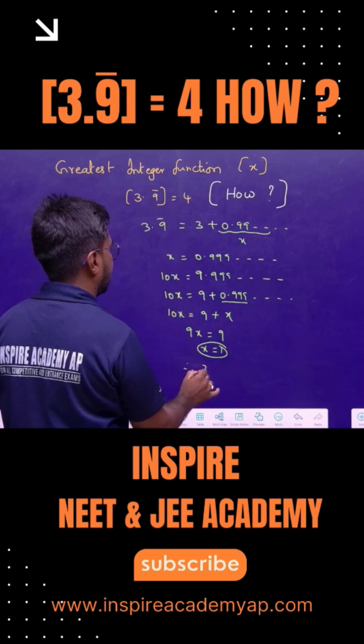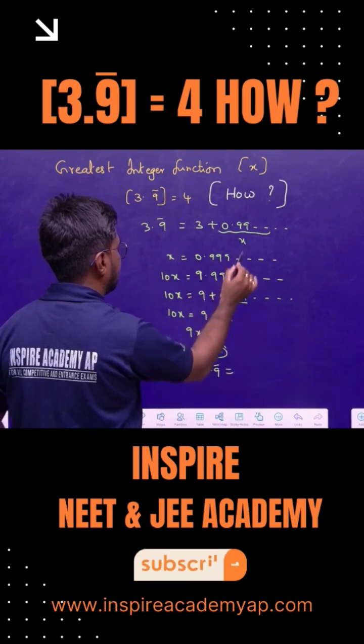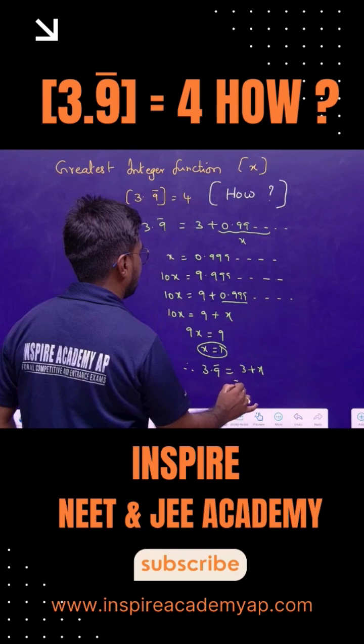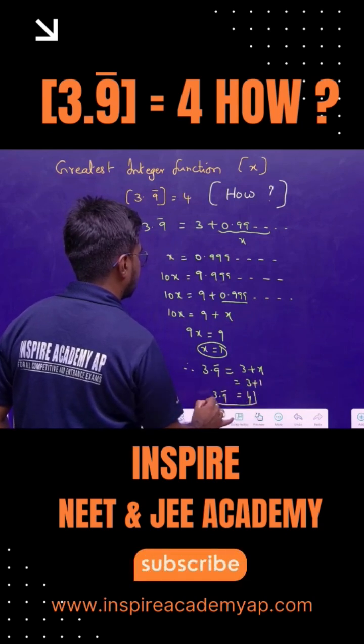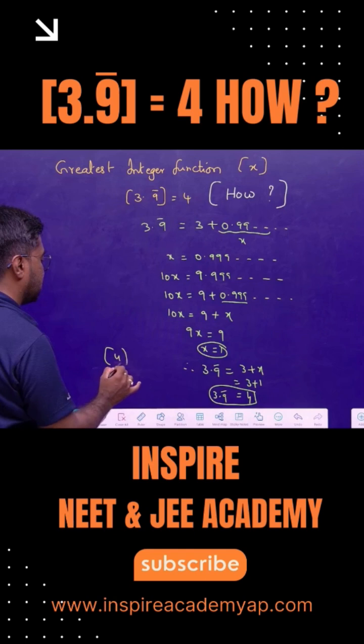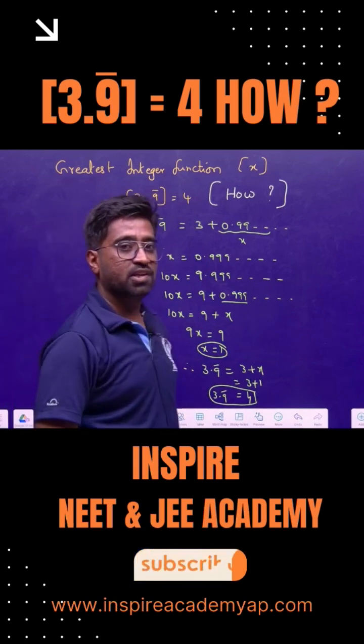Therefore, 3.9 bar is 3 plus x. x is 1, so it's 4. So, 3.9 bar is 4. 3.9 bar is 4. Clear? Thank you.